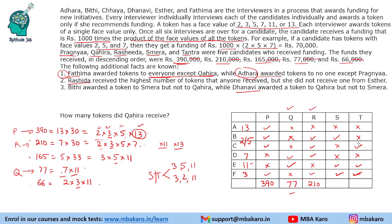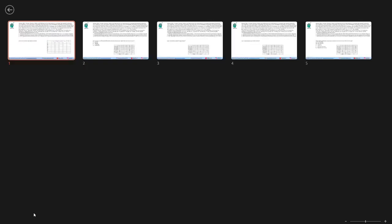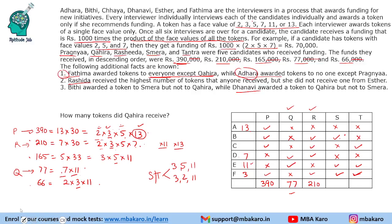This set cannot be fully resolved beyond this point because we do not know whether Bithi or Chaya holds value 2 or 5. Taking the two cases: if Bithi = 2 and Chaya = 5, then Smera gets 66,000 and Tantra gets 165,000. If Bithi = 5 and Chaya = 2, then Smera gets 165,000 and Tantra gets 66,000.